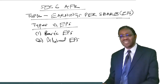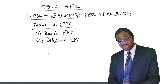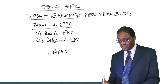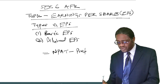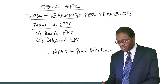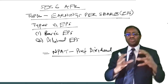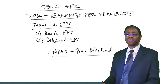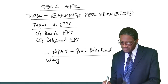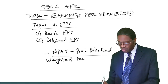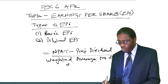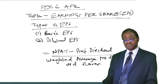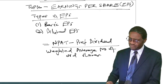How do you determine the earnings attributable to the ordinary shareholders? You take the net profit after tax of the company and subtract what we call the preference dividend. What you get — net profit after tax minus preference dividend — is the earnings attributable to the ordinary shareholders. You then divide that by the weighted average number of ordinary shares.